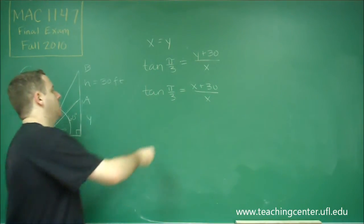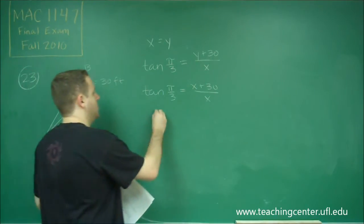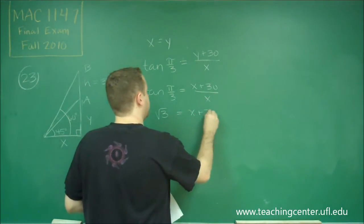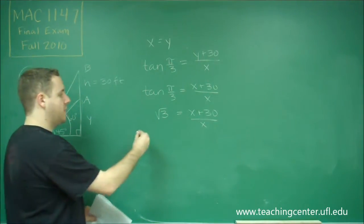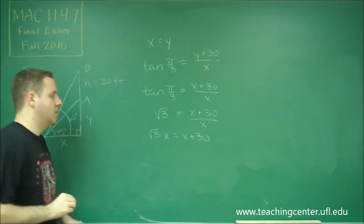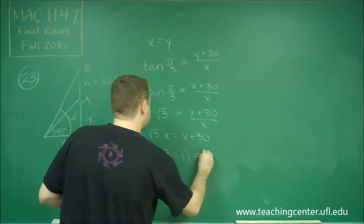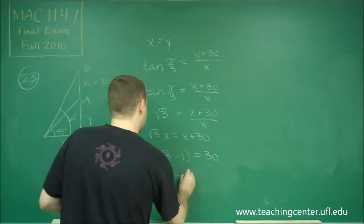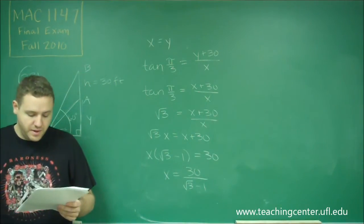Tangent of pi over 3 is one of your unit circle values — you should know that's square root of 3. So square root of 3 equals X plus 30 over X. Multiplying both sides by X gives root 3 times X equals X plus 30. Subtracting X and factoring out: X times (root 3 minus 1) equals 30. So X equals 30 over (square root of 3 minus 1).